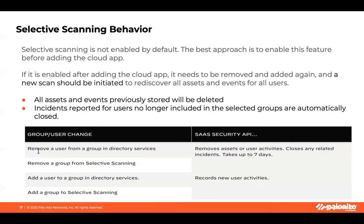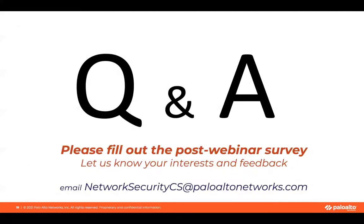There are common behaviors when using selective scanning. If we remove a user from a group in Active Directory, or remove a group from selective scanning, SaaS Security API removes the asset or user activities and closes any related incidents — this might take up to seven days. If we add a user to a group in the directory service or add a group to selective scanning, SaaS Security API records new user activities for new users.